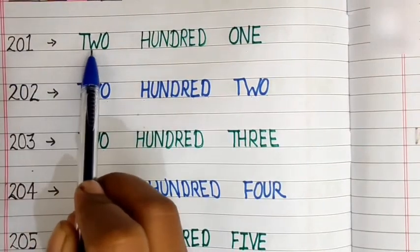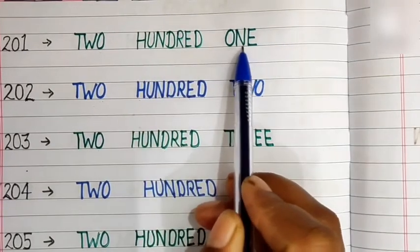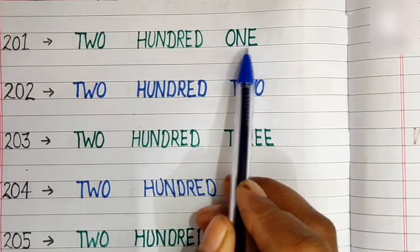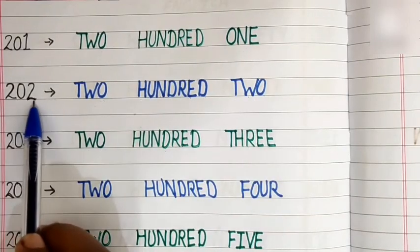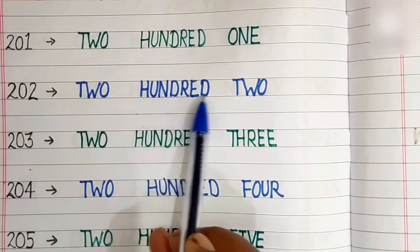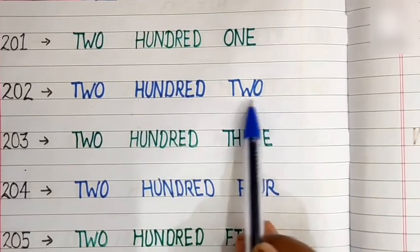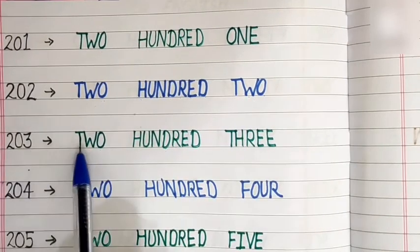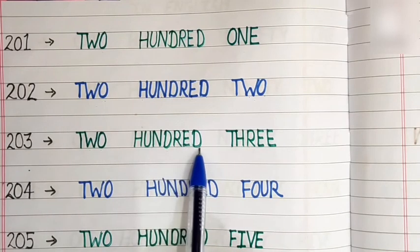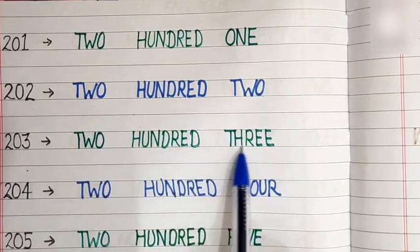201: T-W-O H-U-N-D-R-E-D O-N-E. 201. 202: T-W-O H-U-N-D-R-E-D T-W-O. 202. 203: T-W-O H-U-N-D-R-E-D T-H-R-E-E. 203.